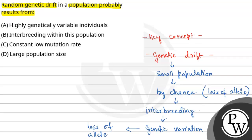Now let's check our options again. Option A: highly genetically variable individuals. Highly genetically variable individuals, until and unless they are meeting with another population or species, are contributing to the existing gene pool. This does not cause genetic drift. Genetic drift happens only when you are making changes at the gene level through migration, gene flow, or genetic drift events. So even if highly genetically variable genes are present, you can still keep that population in equilibrium — so this is not a result of genetic drift.